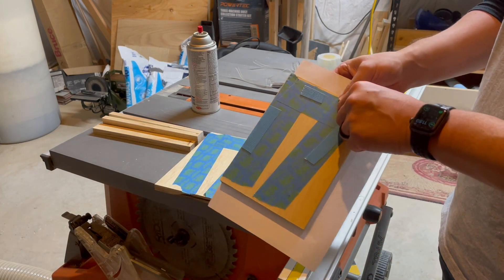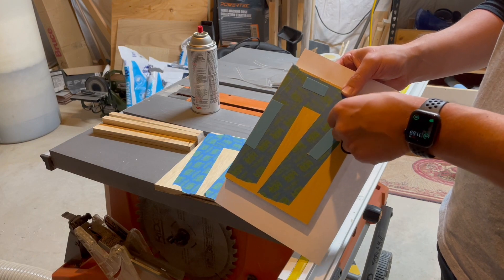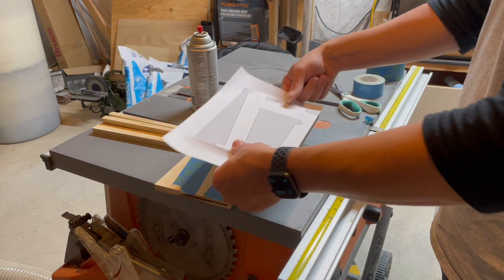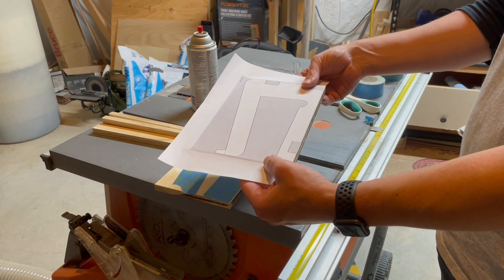Now, we're just going to peel up this double-sided tape, stick it down, and cut it out on the bandsaw. Let's do that.